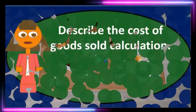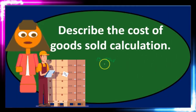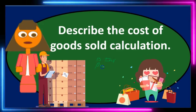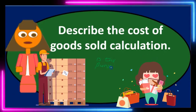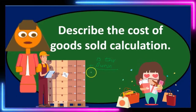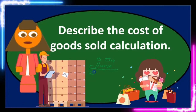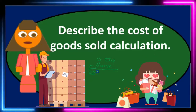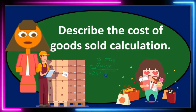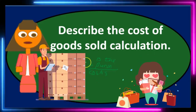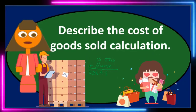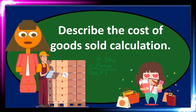When thinking about cost of goods sold, we start with beginning inventory as the starting point, then we add purchases. That will give us the cost of goods available for sale. If you think about it, of course that makes sense.